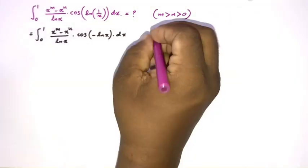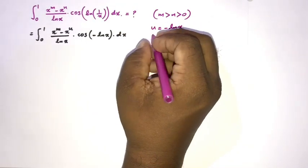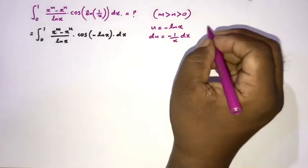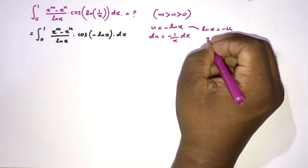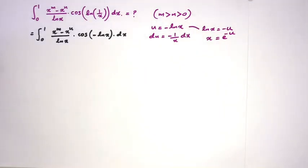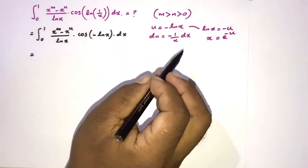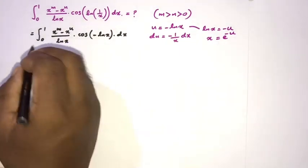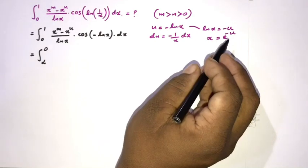We take the substitution u equals minus natural log of x, so du equals minus 1 over x dx. We also know natural log of x equals minus u, so x equals e to the minus u. Changing the boundaries: when x approaches 0, u approaches infinity; when x approaches 1, u approaches 0.